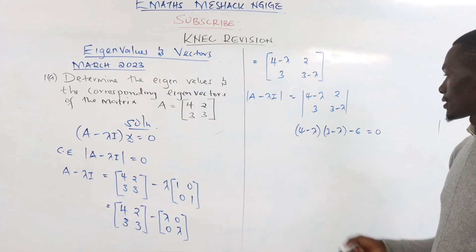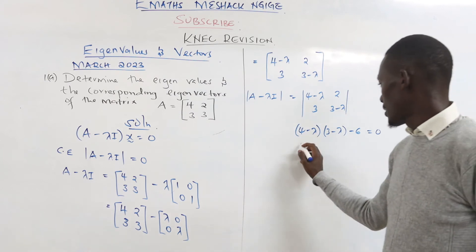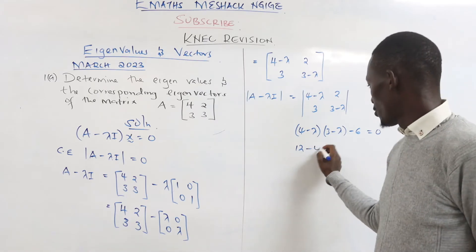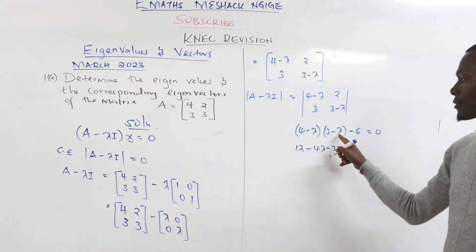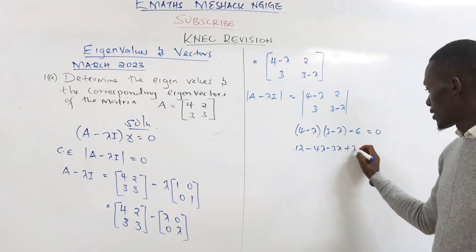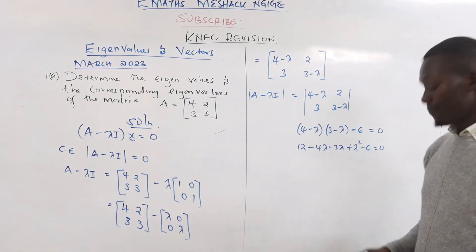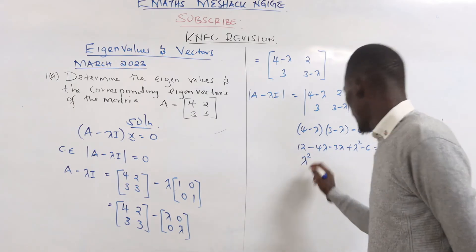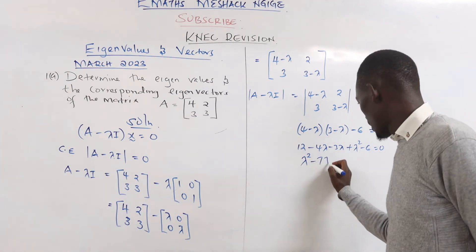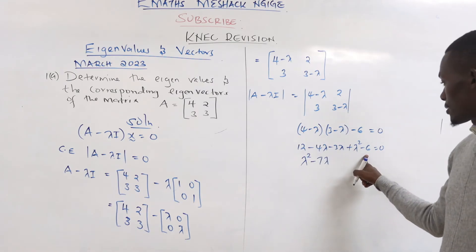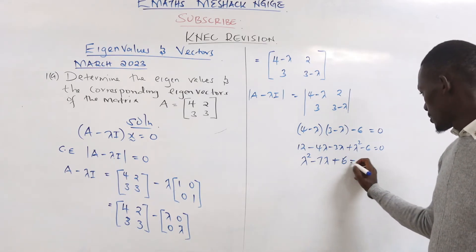Expanding: 4 times 3 gives 12, 4 times negative lambda gives negative 4 lambda, negative lambda times 3 gives negative 3 lambda, and negative lambda times negative lambda gives positive lambda squared, minus 6, equals zero. Collecting terms starting with highest power: lambda squared minus 7 lambda plus 6 equals zero.